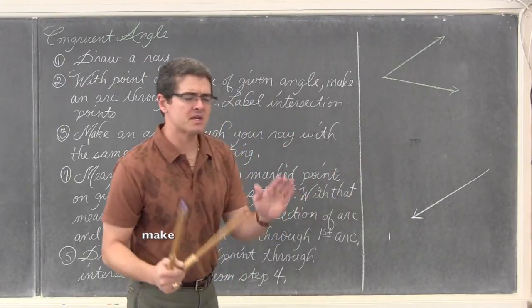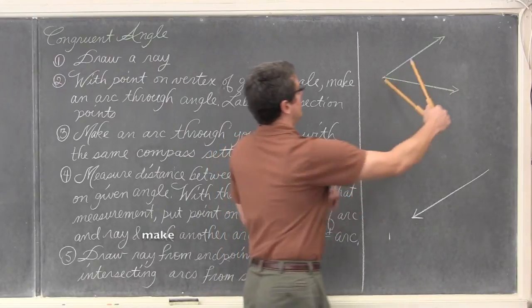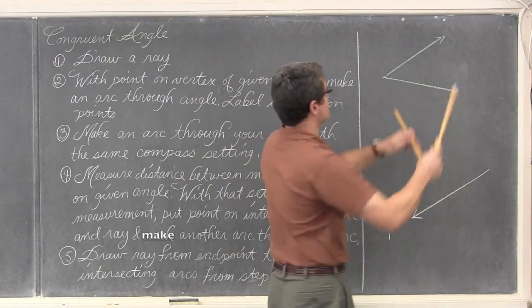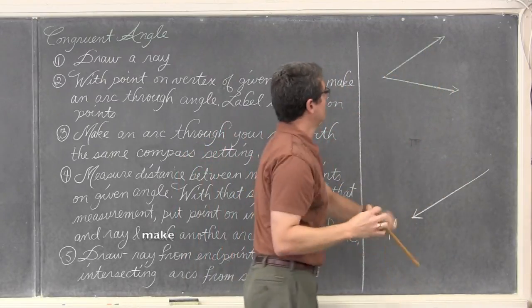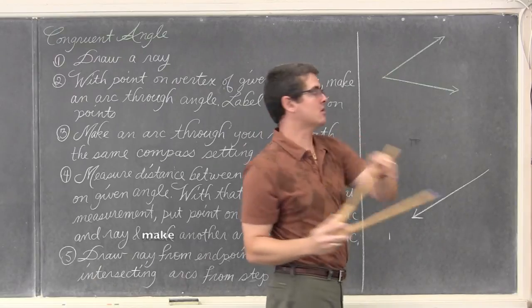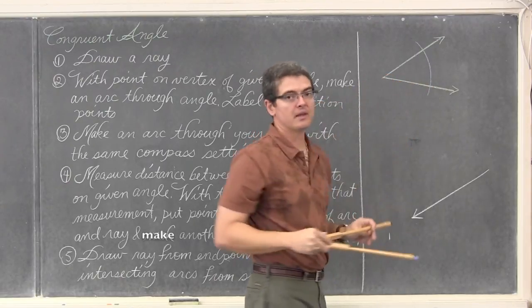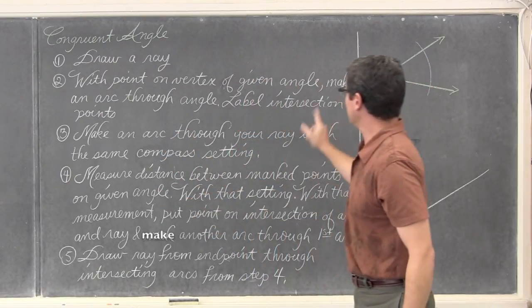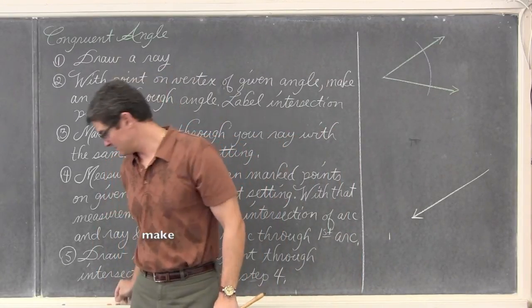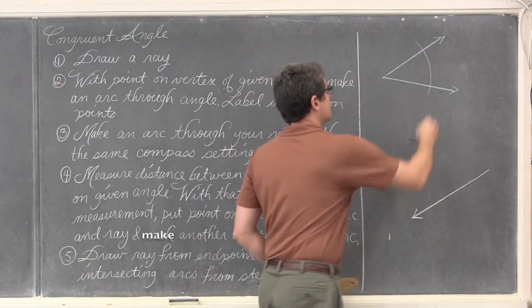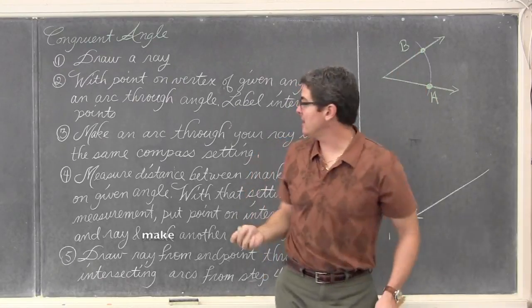So now what we have, we have our ray. Step one: with the point of our compass on the vertex of the given angle, make an arc through the angle. Now I am not taking any measurements, I just need an arc going through this given angle that I can use as reference. So I can't have it extend beyond the angle, so I am going to shrink this up a little bit. My rubber side, the point of your compass on the vertex and draw an arc through that given angle. Now we are going to label those intersection points and let's call that A and B. This is going to be point A and this point B.